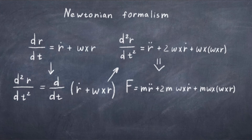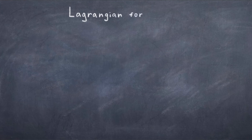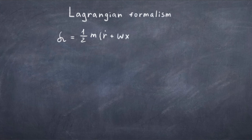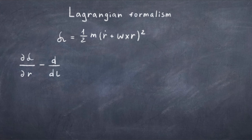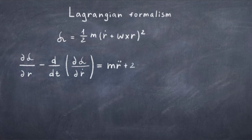This is the result using the Newtonian formalism. Now let us consider the same problem in the Lagrangian formalism. In this case we don't have a potential term, so the Lagrangian L equals one-half m times (r-dot plus omega cross r) squared. Plugging it into the Euler-Lagrange equation, we find the equation of motion: m times (r-double-dot plus 2*(omega cross r-dot) plus omega cross (omega cross r)) equals zero.